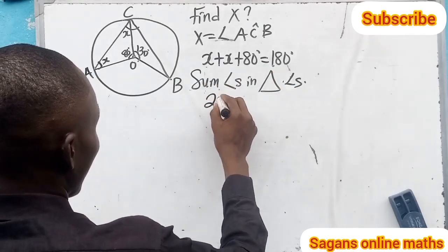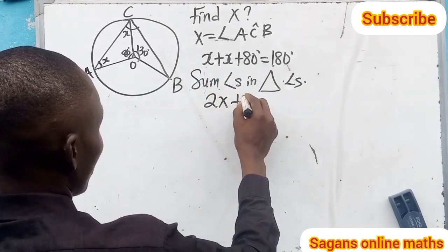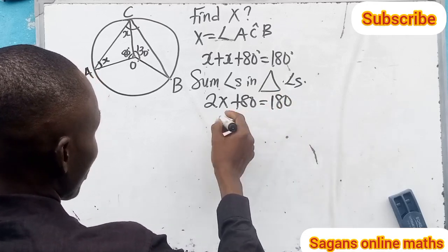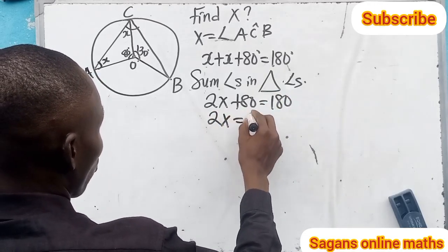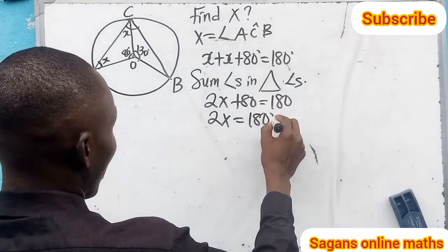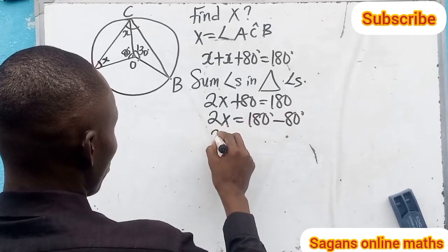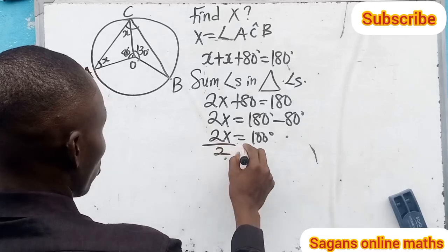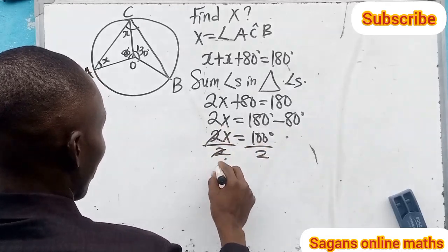That means 2x plus 80 equals 180 degrees. Let's subtract 80 from both. That means 2x will be equal to 180 degrees minus 80 degrees, so 2x equals 100 degrees. Let's divide here by 2. So x will be equal to 50 degrees.